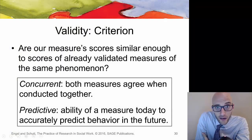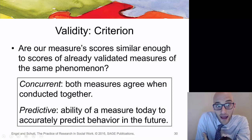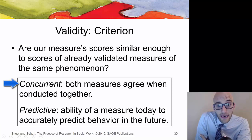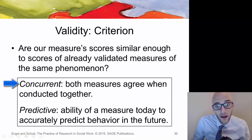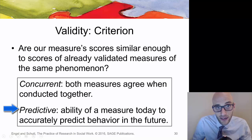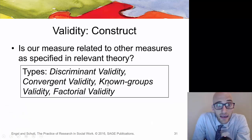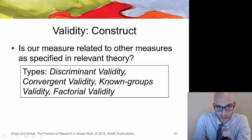Criterion validity asks whether a measure's scores are similar enough to an already validated measure of the same construct. If developing a new life satisfaction measure, we might compare it to another standardized quality of life measurement. Concurrent criterion validity looks at the degree to which the two responses merge together. Predictive validity is the ability to measure today and accurately predict the future — think of the ACT or SAT predicting a student's likelihood of success. Construct validity examines whether a measure relates to other measures specified by theory, and includes discriminant validity, convergent validity, known groups validity, and factorial validity.